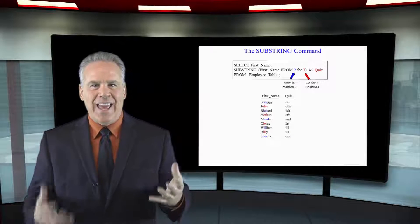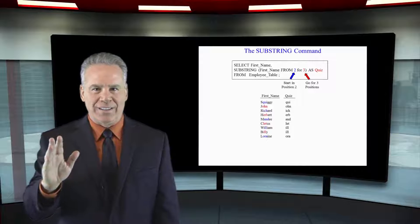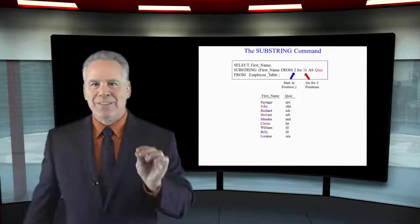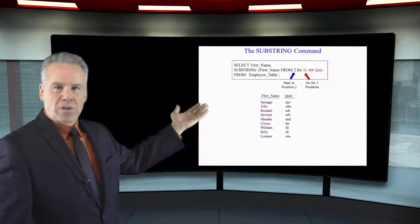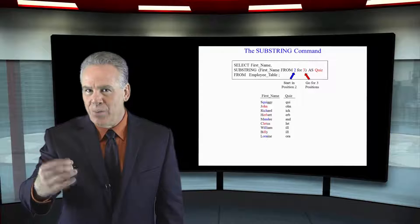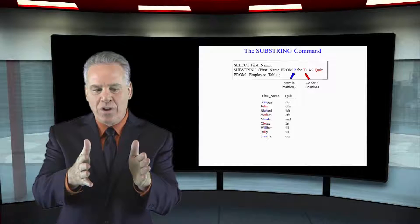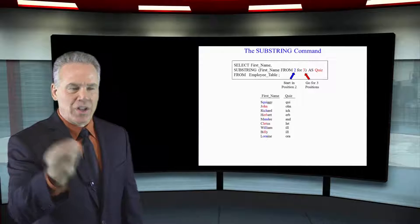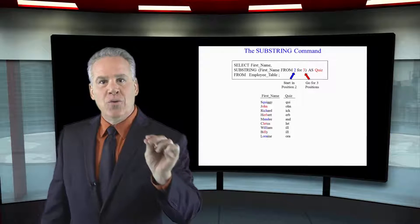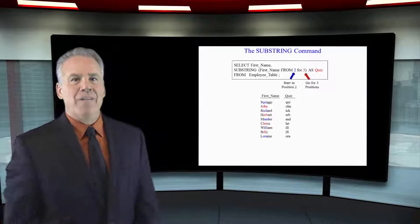This is the substring command. It's going to start off easy but get more complicated — I'll show you from beginning to end. I'm going to select the first name and substring it from two for three, which means: start in position two and go for three positions. With the name 'squiggy', we start at position two, which is the Q, and hop three times: Q, U, I. Starting position, then how many positions to go — that's the basics of the substring command.